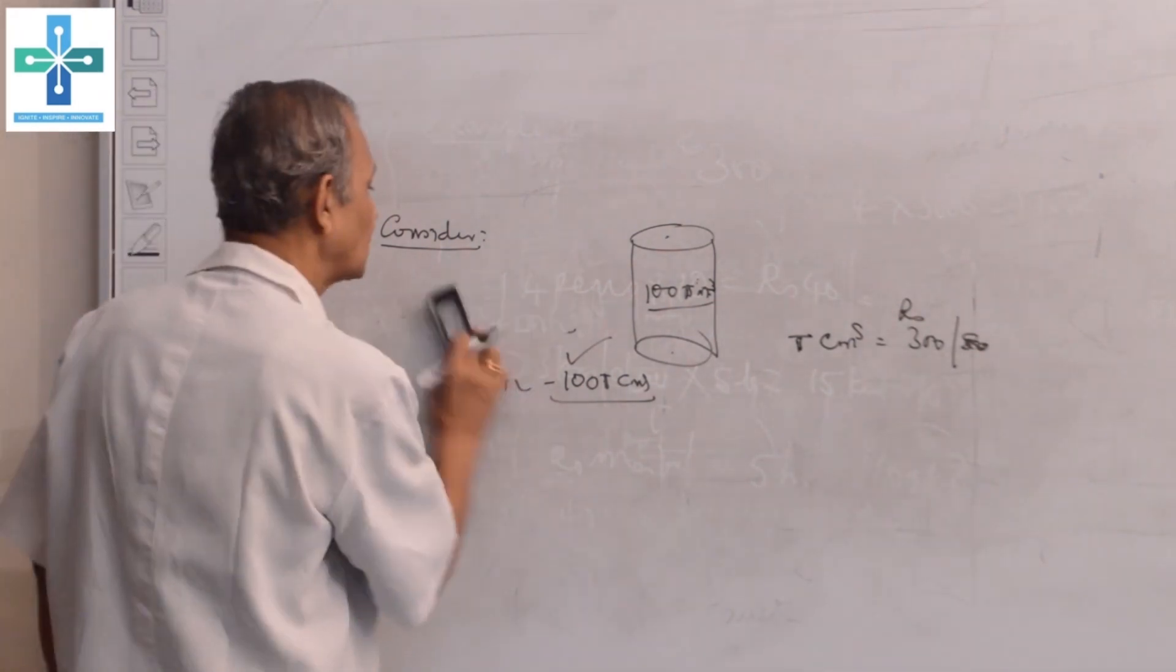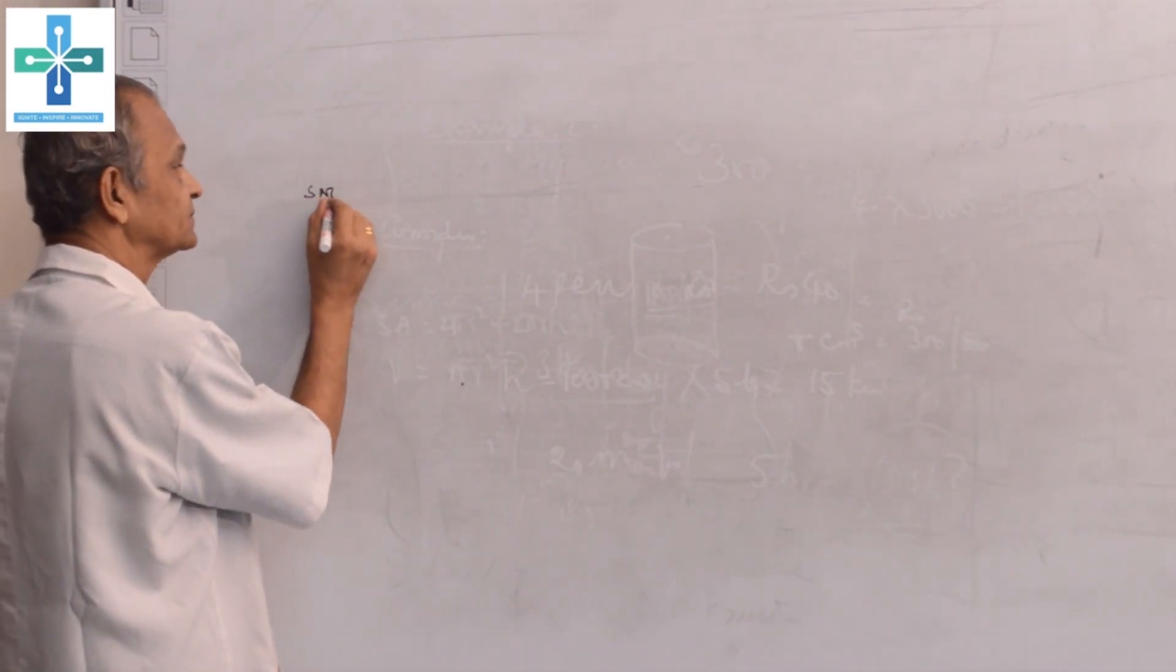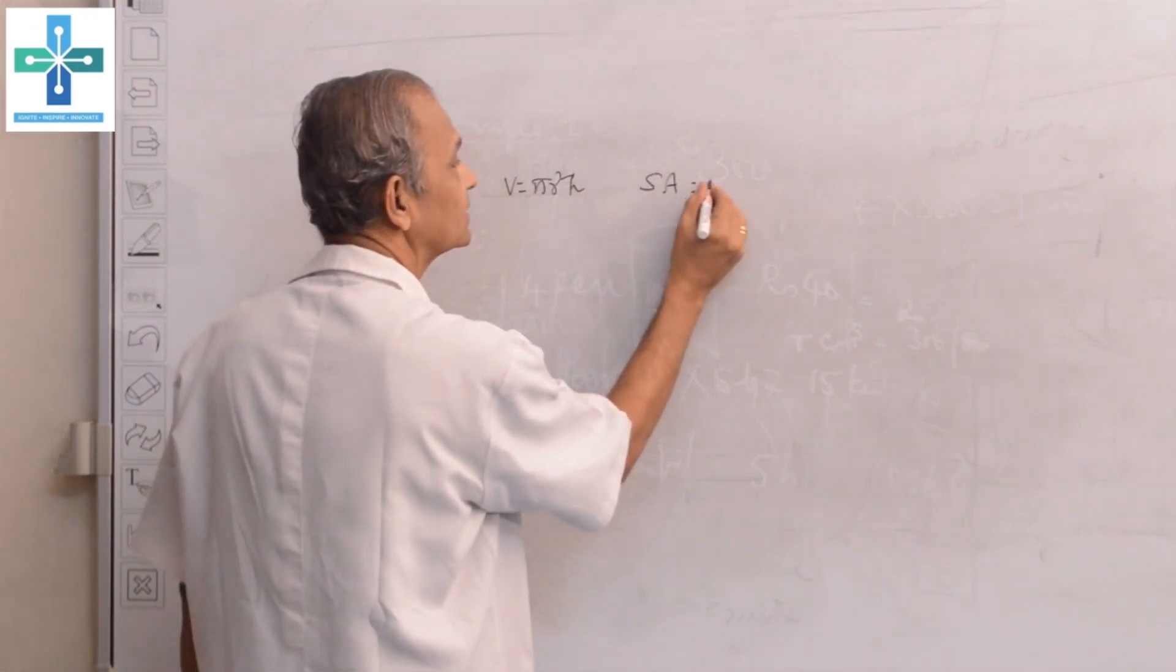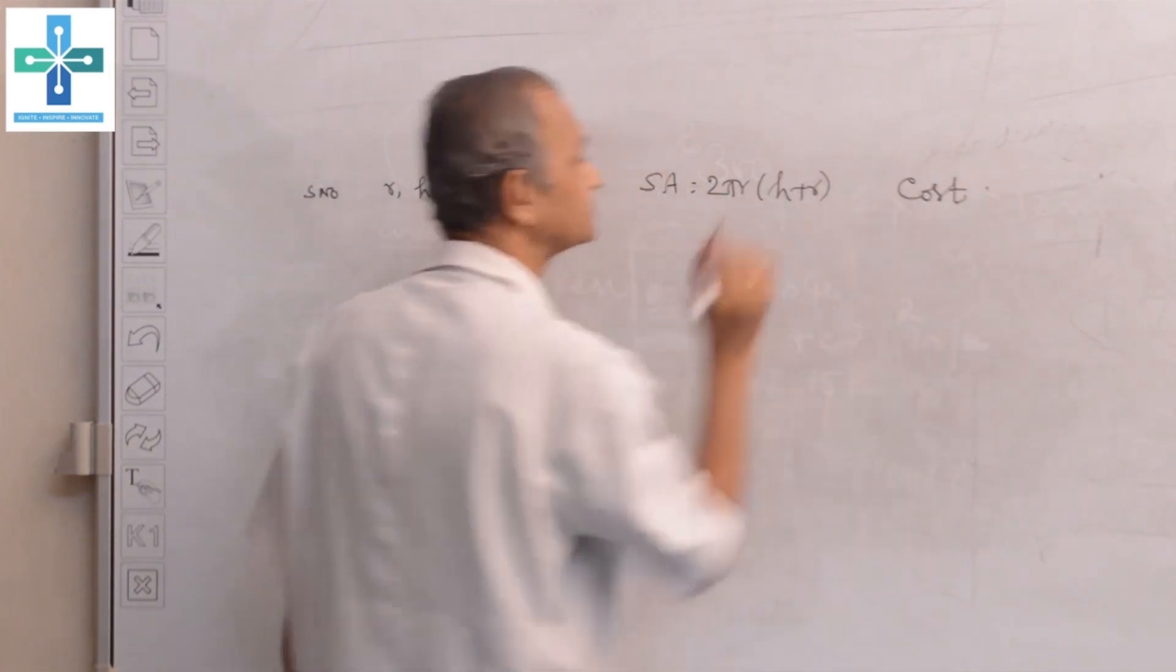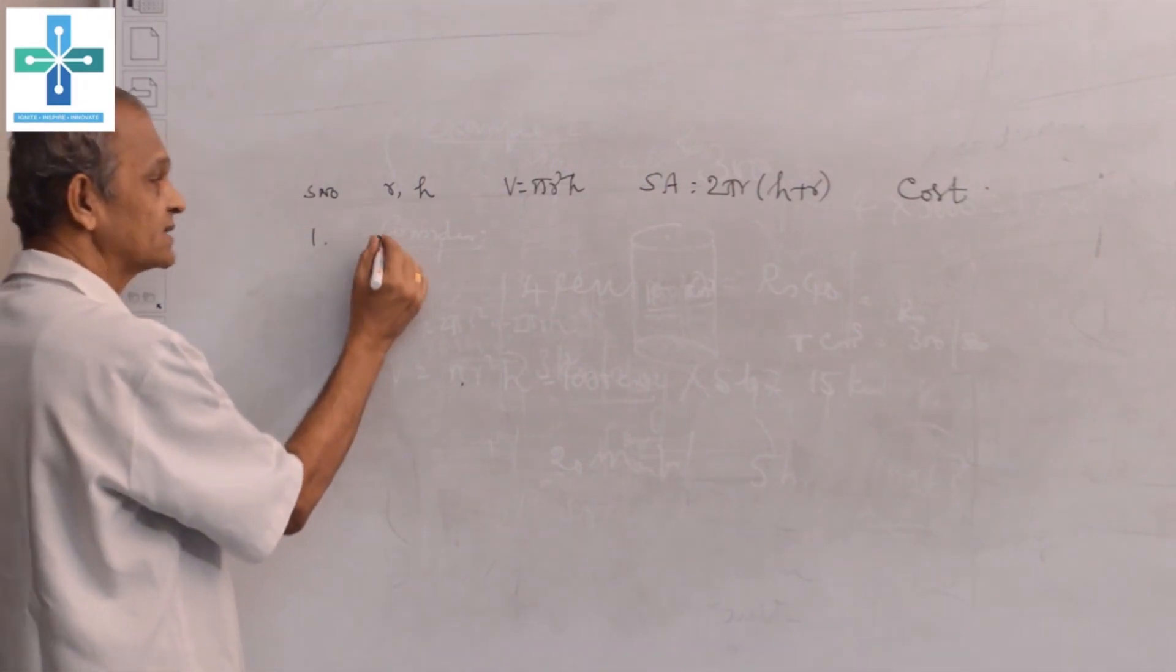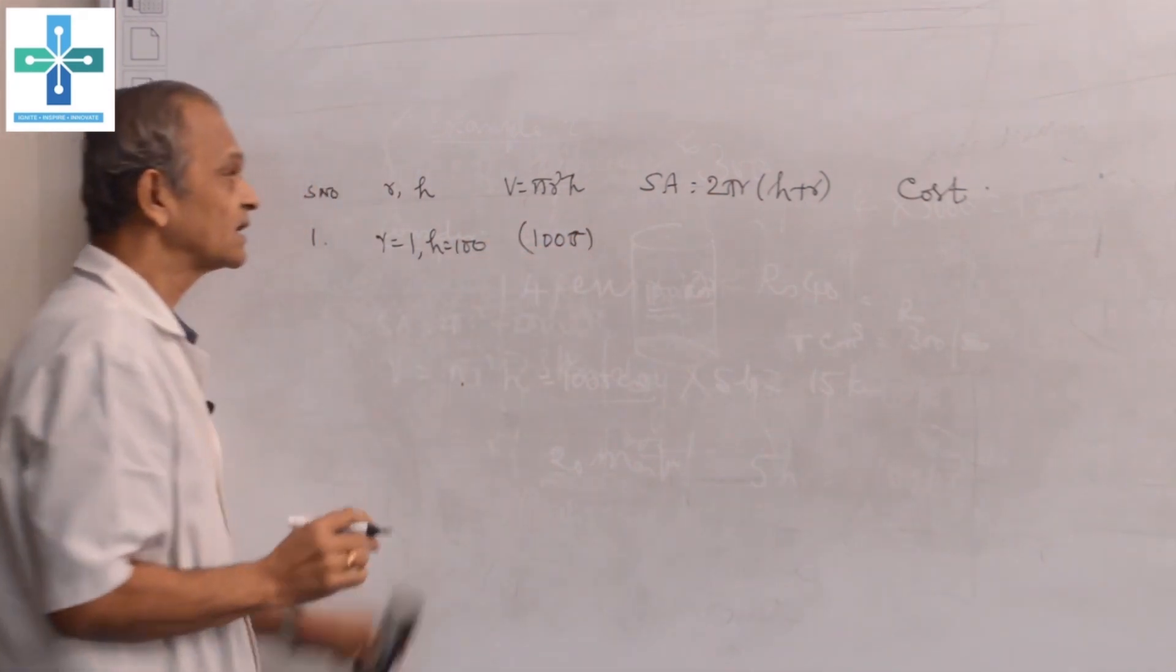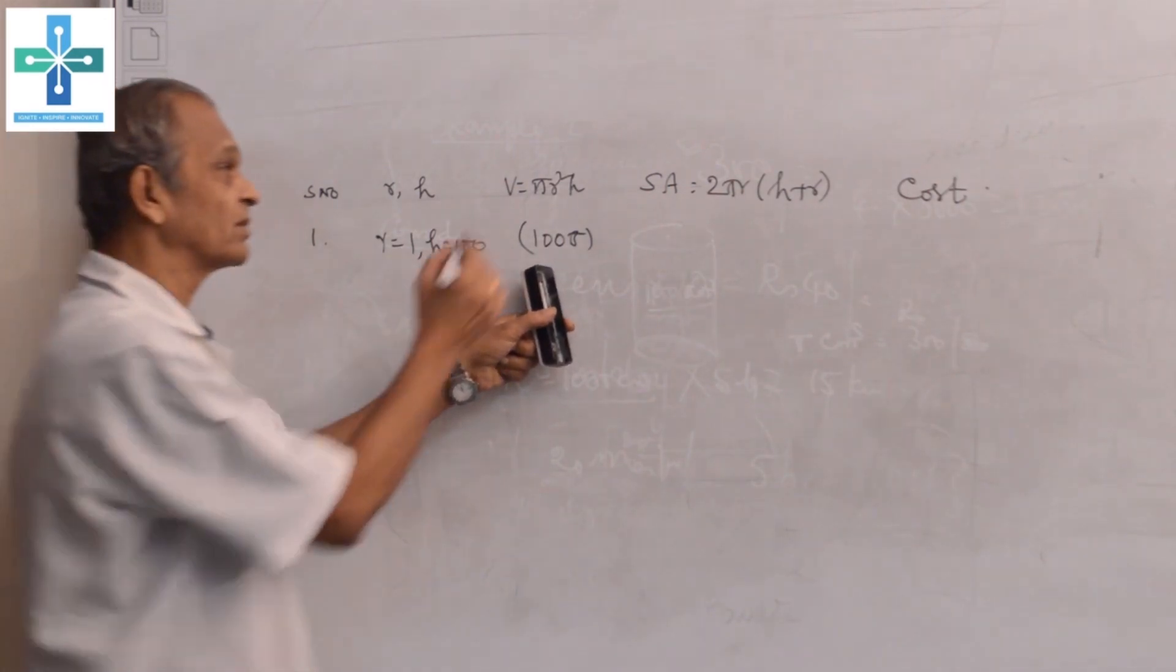We have a table with serial number, r value, h value, volume V = πr²h, surface area = 2πr(h + r), and cost. Number 1: I fix radius r = 1 and h = 100. Your πr²h will be 100π. The surface area 2πr(h + r) equals 202π.